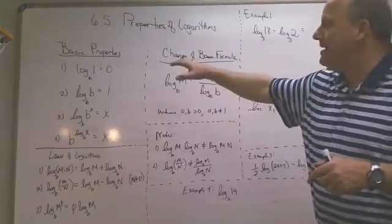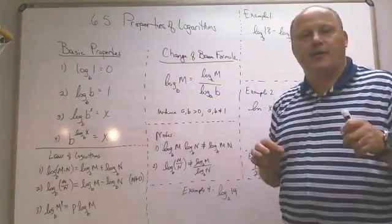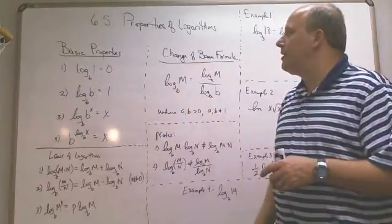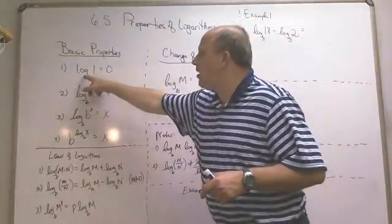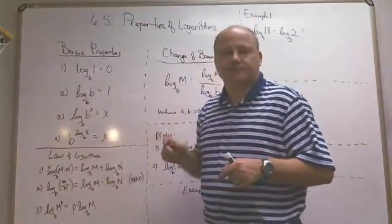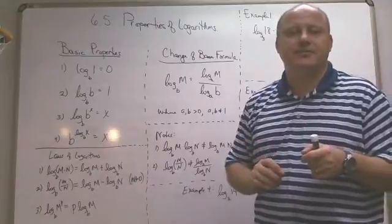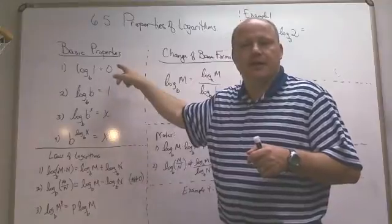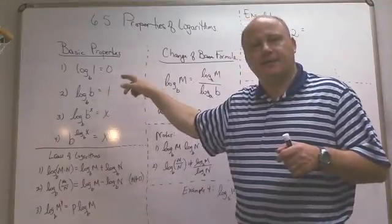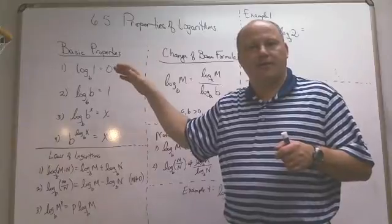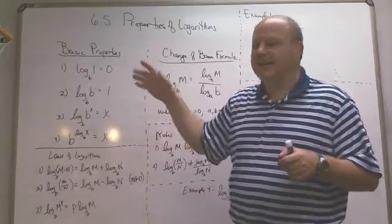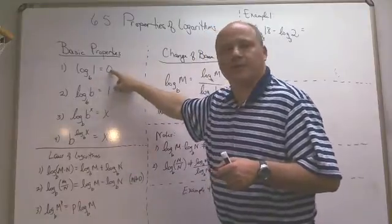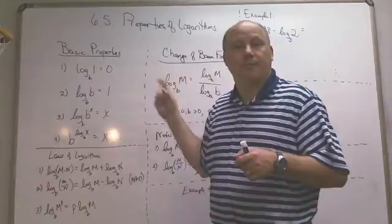I've listed the basic properties all together in one section. The first basic property is log base B of 1 equals 0. When the base is B (where B is greater than 0 and not equal to 1), if the input is 1, the output is 0. That makes sense because all logarithmic functions go through the point (1, 0).